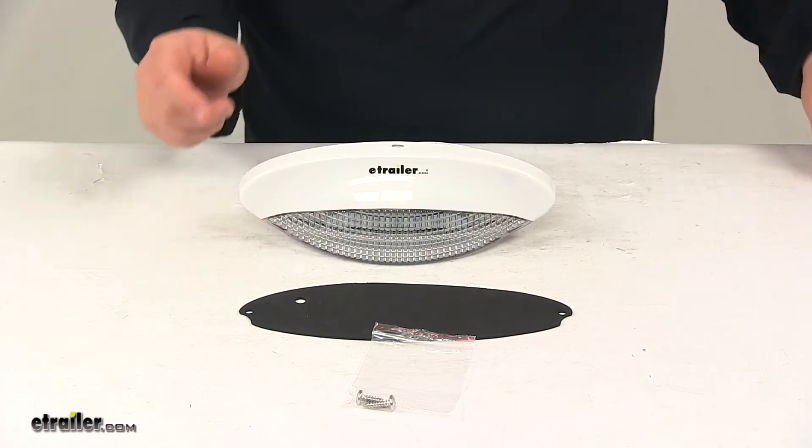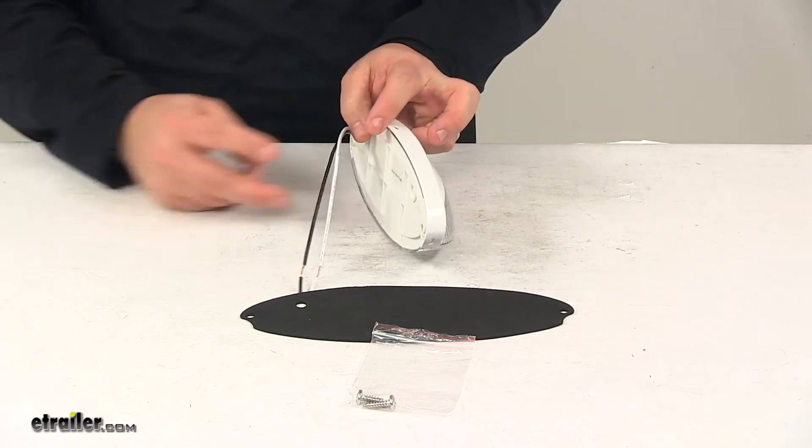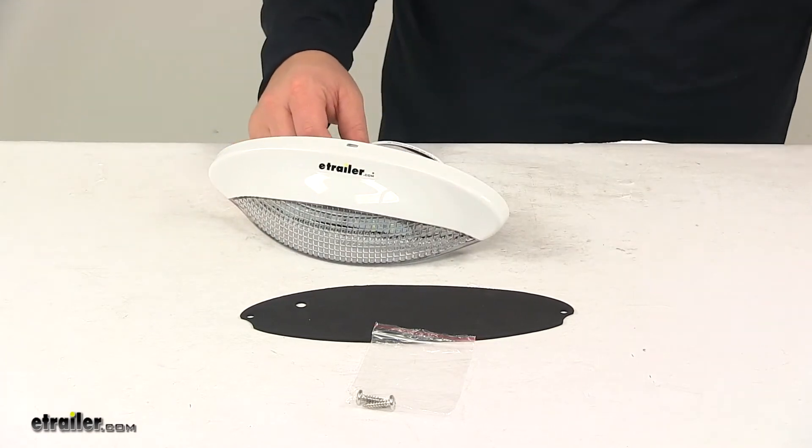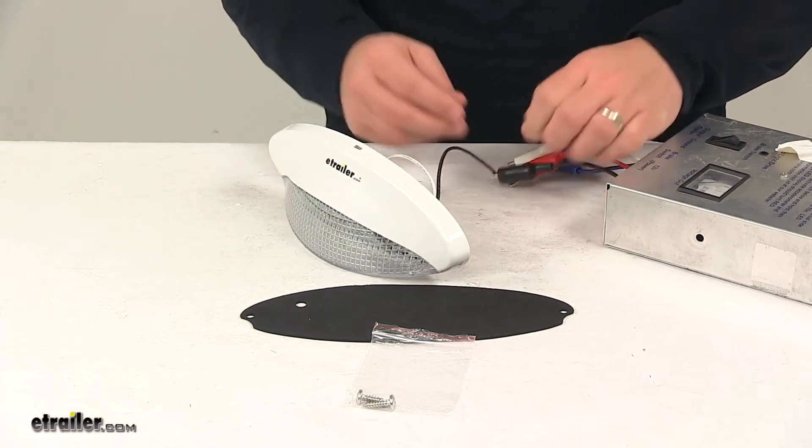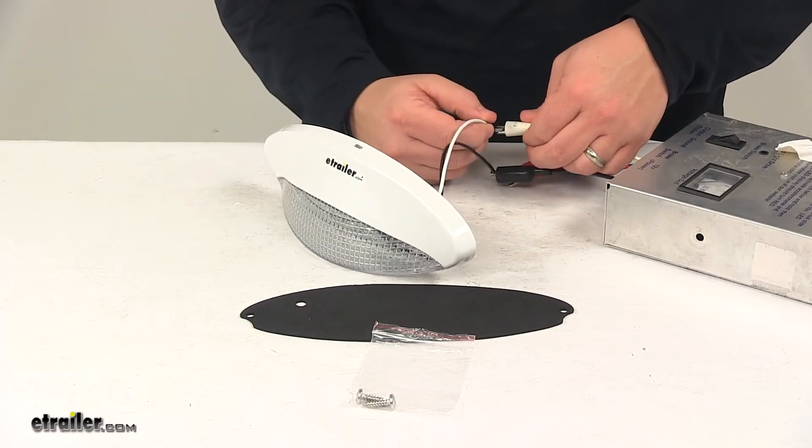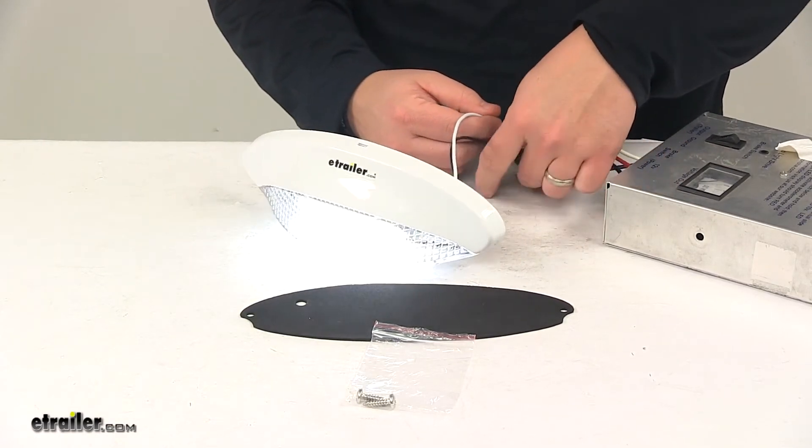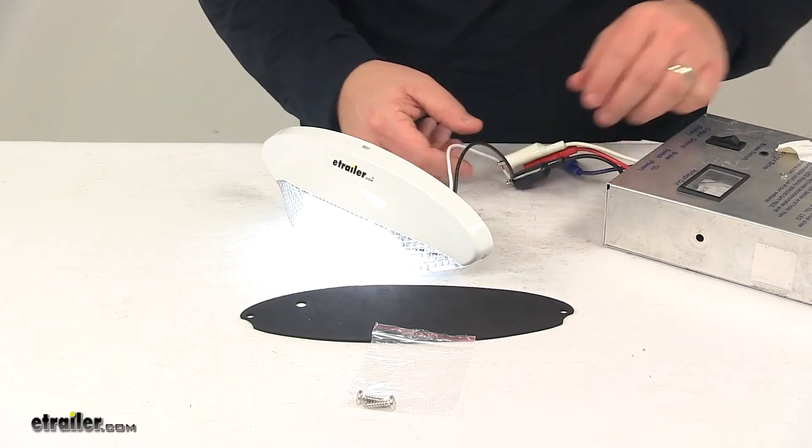We're going to go ahead and hook it up to power. It is a two-wire design so you have your white and black wires. So we'll go ahead and hook that up. The black wire is power wire and then the white wire is ground wire.